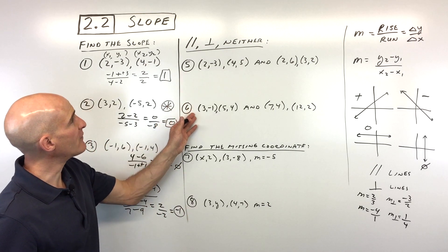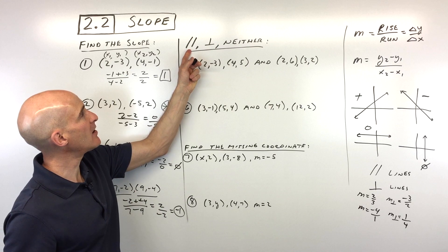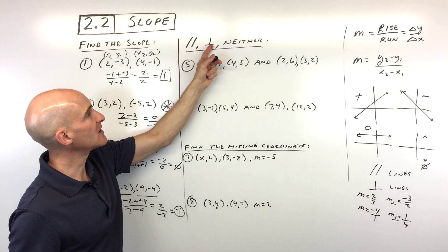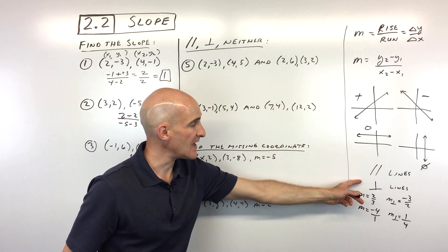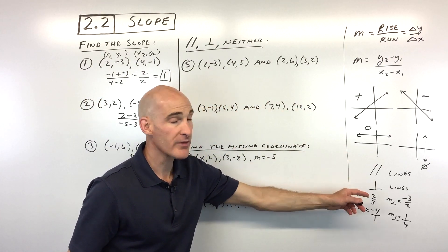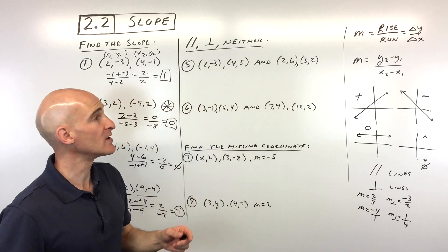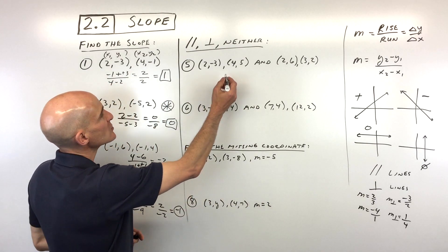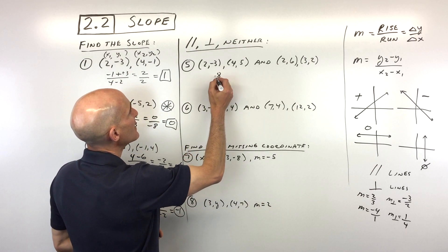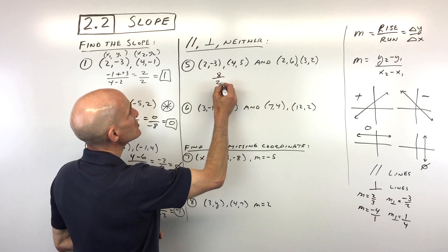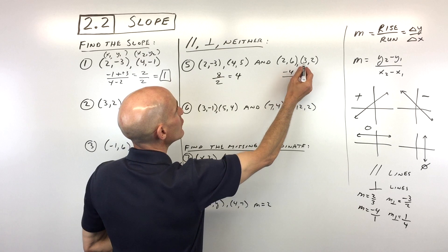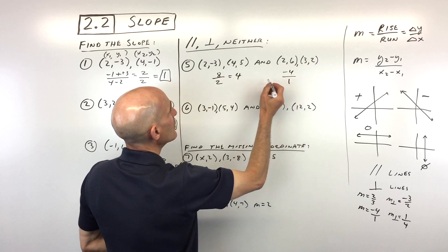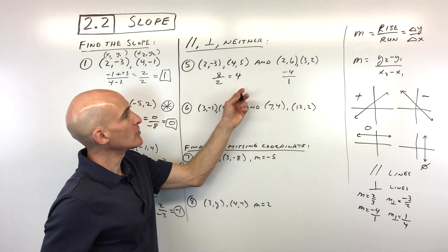Okay, great job. So now these ones, 4 and 5, it's asking us, are the lines parallel? This is the symbol for parallel. Perpendicular or neither? Well, the only way to really determine that is to find out the two slopes, see if they're the same, then that means they're parallel. Or are they opposite reciprocals? That means that they're perpendicular. So let's try this one here. So we're going to do 5 minus -3, which is 8, over 4 minus 2, which is 2. 8 divided by 2 is 4. 2 minus 6 is -4. 3 minus 2 is 1. What do you think? Are these parallel or perpendicular or neither?